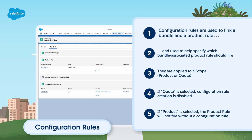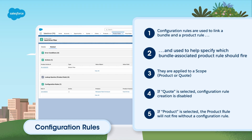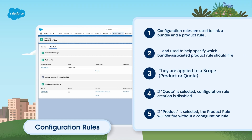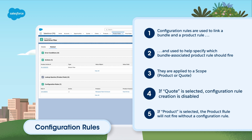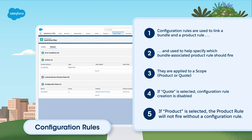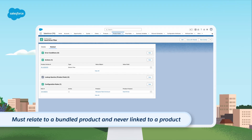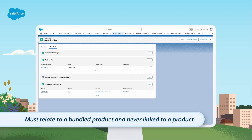Configuration rules are used to link a bundle and a product rule, and help specify which bundle-associated product rule should fire. They are applied to a scope product or quote — if quote is selected, configuration rule creation is disabled; if product is selected, the product rule will not fire without a configuration rule. It's important to note that they must relate to a bundled product and should never be linked to a product without product options or configuration attributes.